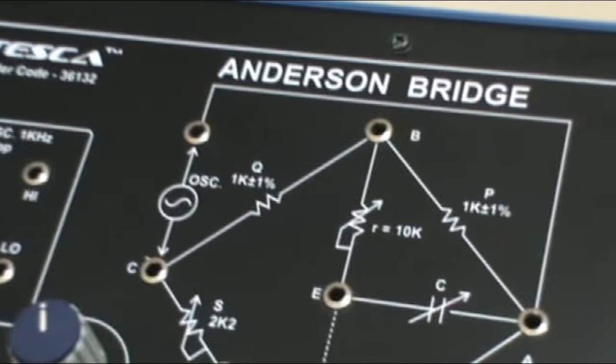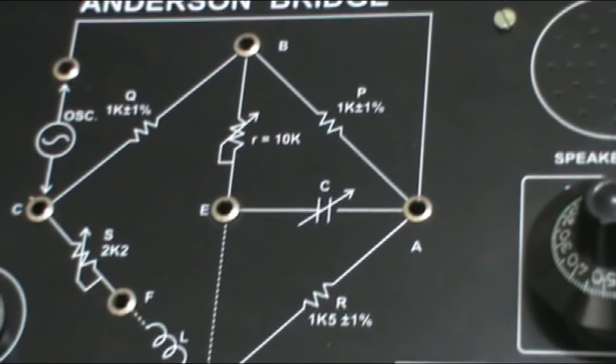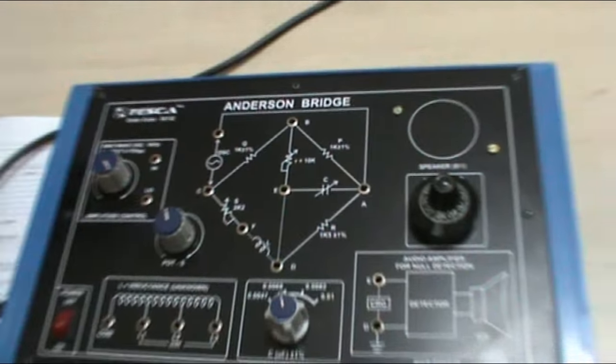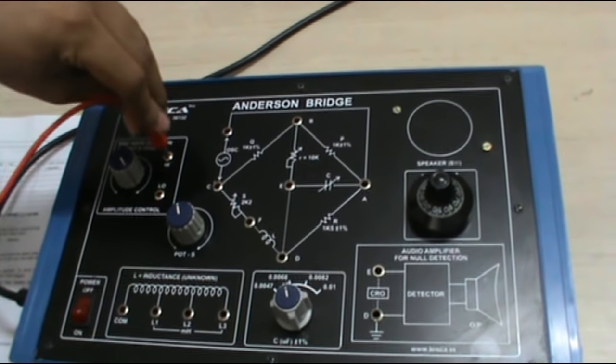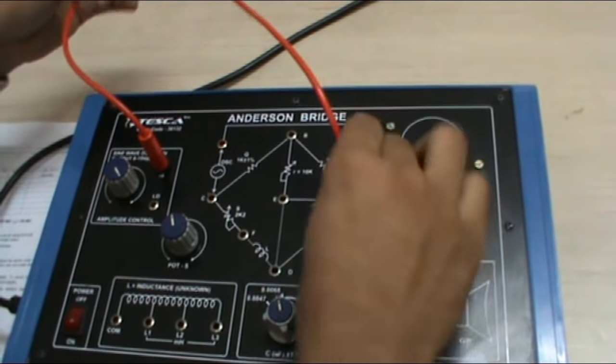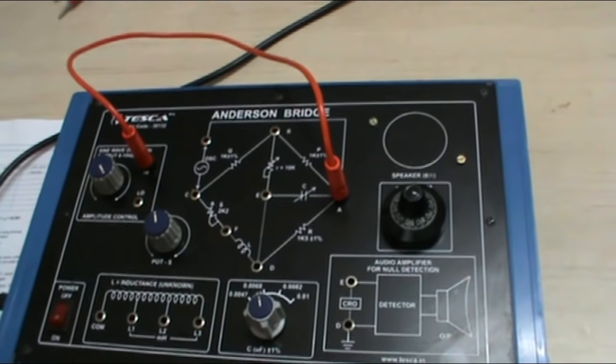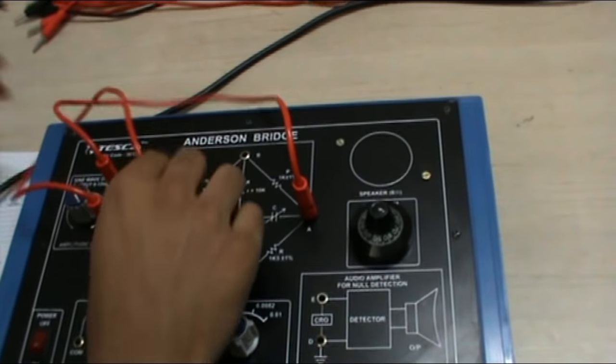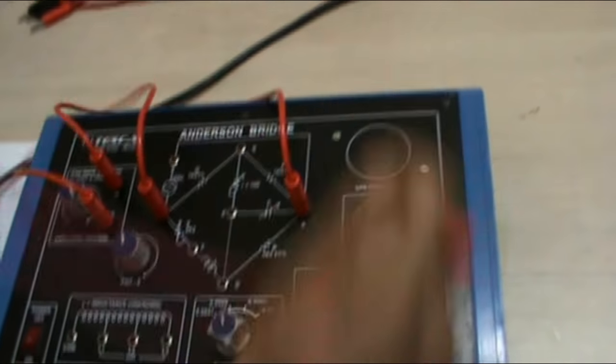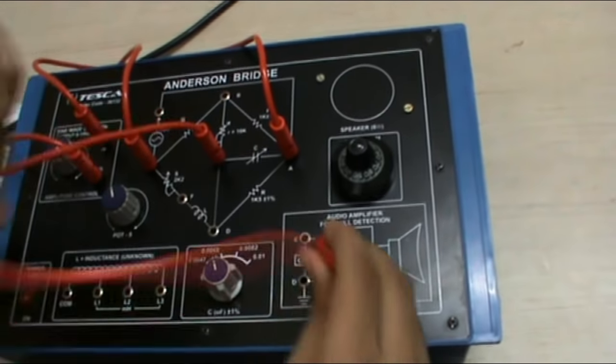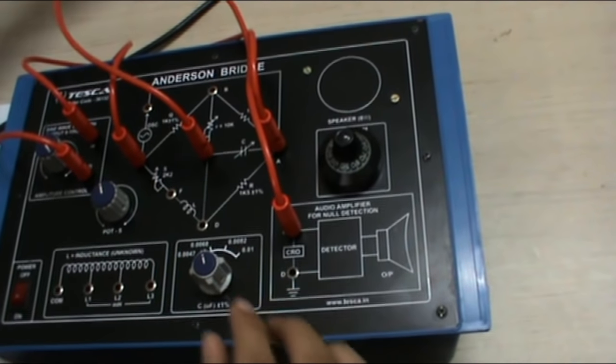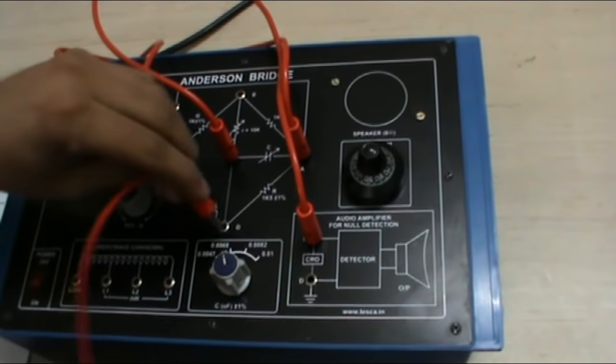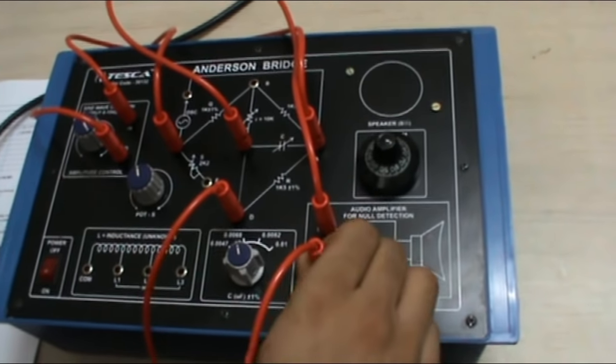Now the connections that we have to make. First of all connect this sine wave oscillator 1kHz, goes high to A point and low point to C point. Now connect E point to E point of detector and D point of bridge to D point of detector.